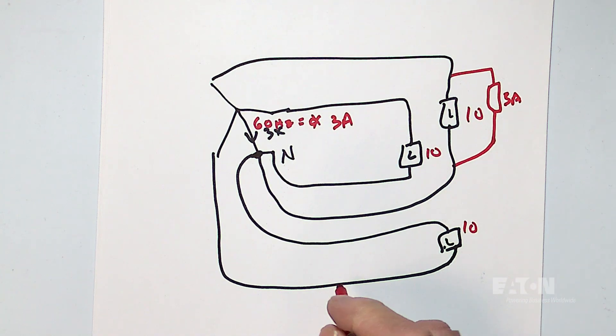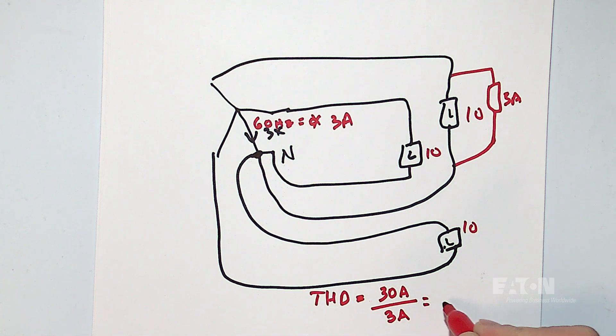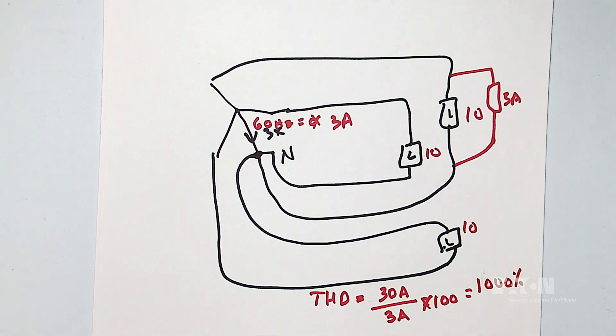So how do we calculate THD? THD is all the harmonics added together. And in this case, it's 30 amps. We'll ignore everything else. Divided by the fundamental. So now I have times 100%. So now I have 1000% distortion on my neutral.